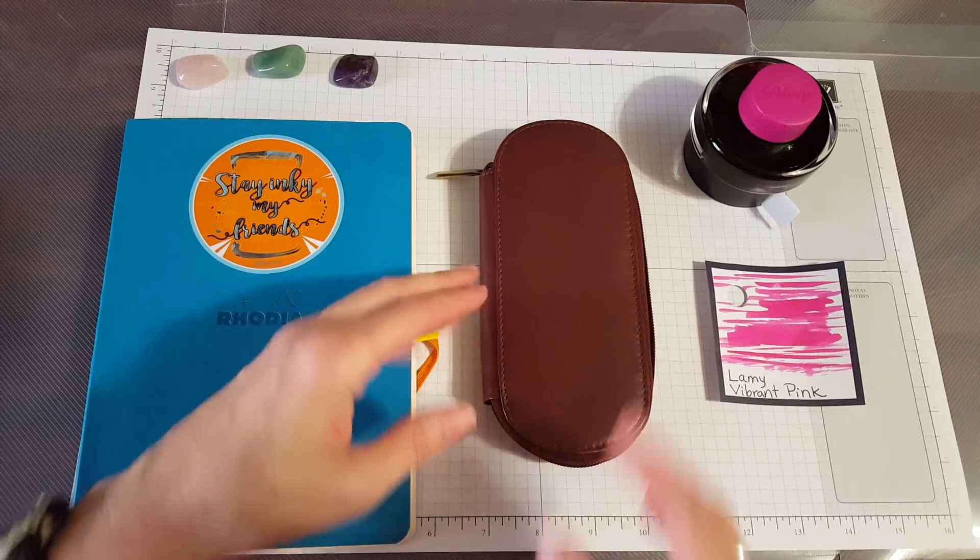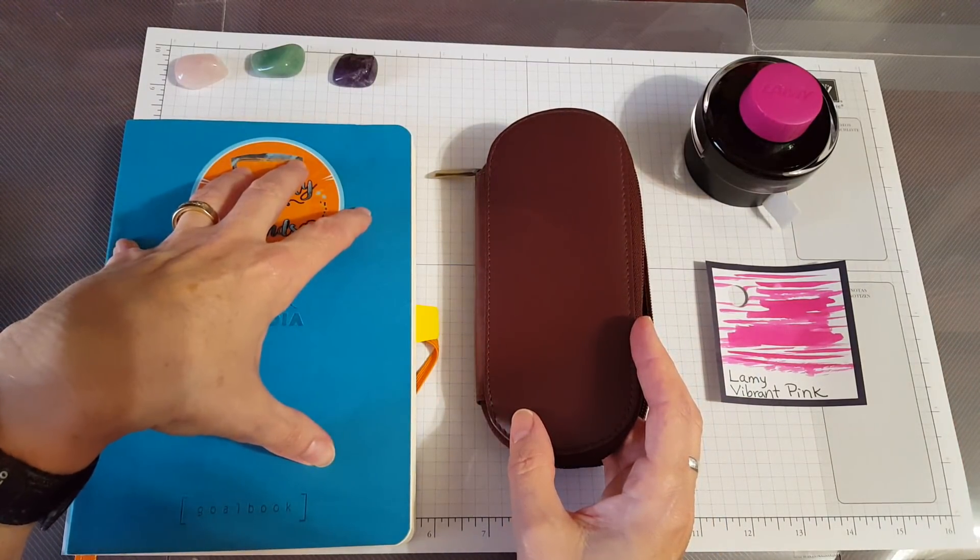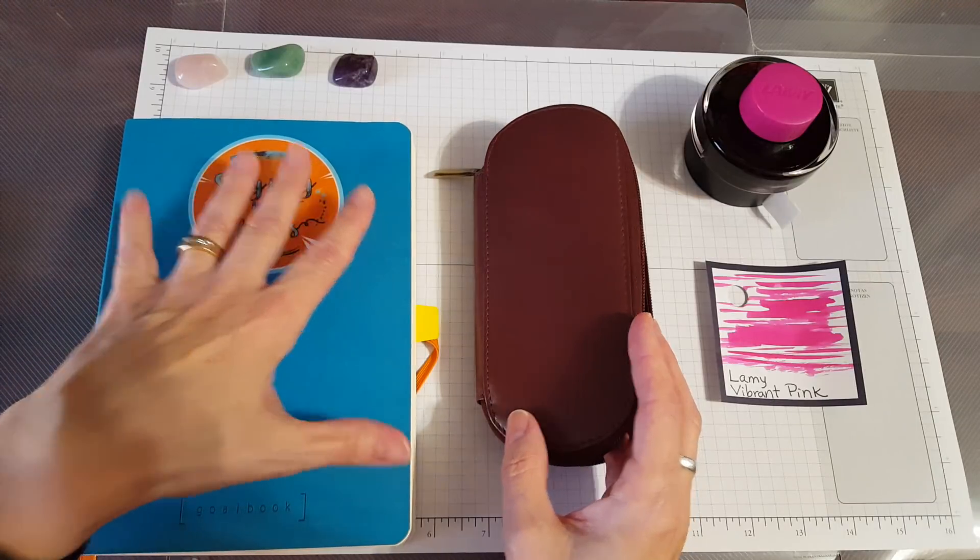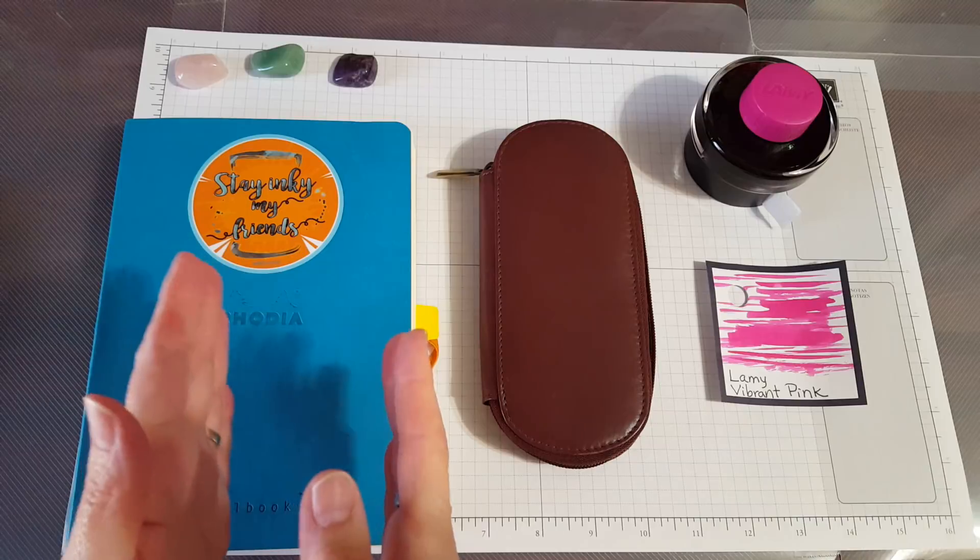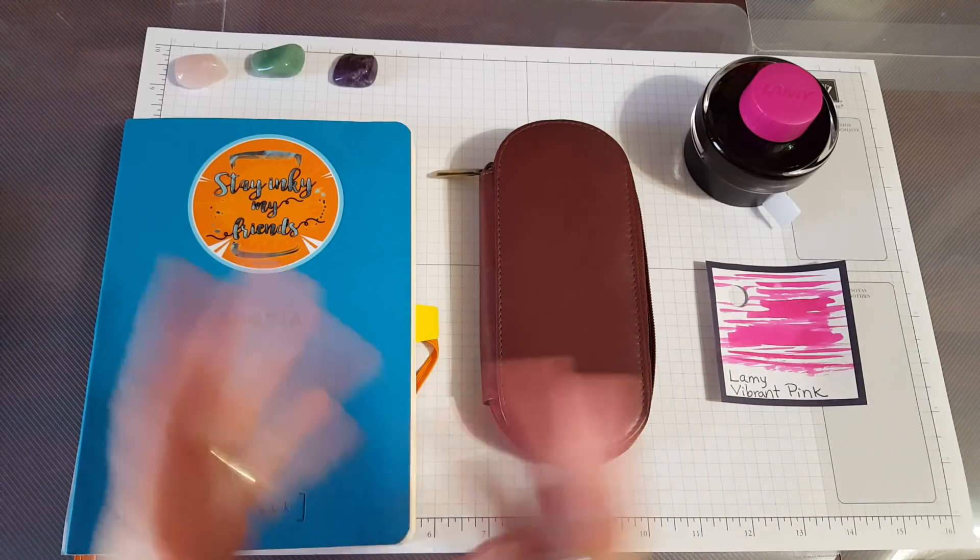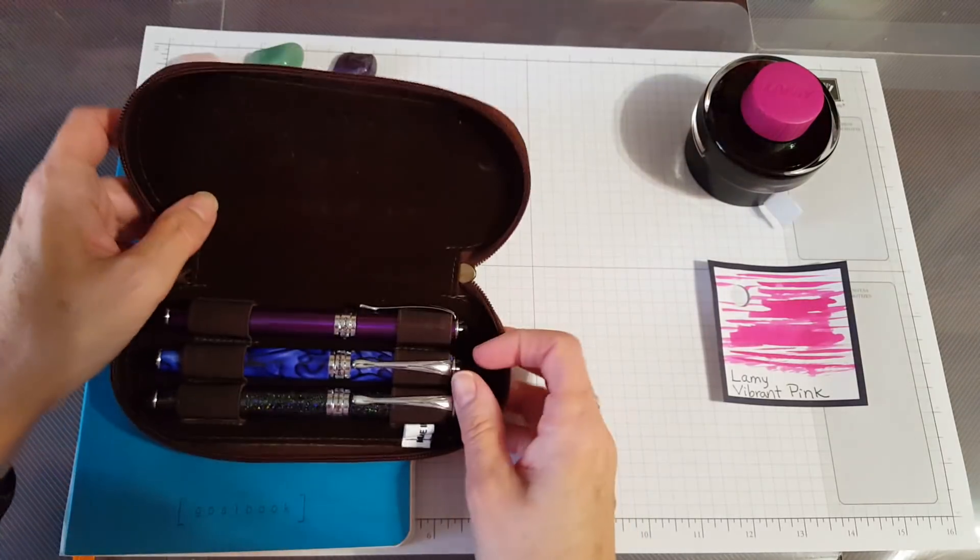So that was my big excitement and to me it was really exciting to go ahead and get that ink. I'll show you on my page where it has all my colors - I didn't have a pink and it was kind of between Diamine Hope Pink and the Lamy Vibrant Pink. I really didn't want both of them.